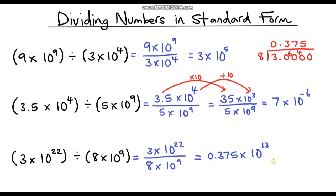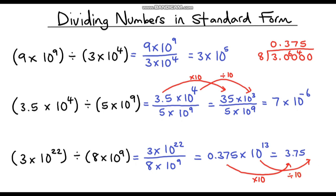You might be tempted to leave the answer as 0.375 times 10 to the power 13, but this is not in standard form because the base number is not between 1 and 10. So I multiply 0.375 by 10 to get 3.75, and do the opposite to the power of 10 — divide by 10 — giving 10 to the power of 12. So the final answer is 3.75 times 10 to the power 12. Always make sure your answer is written in standard form.